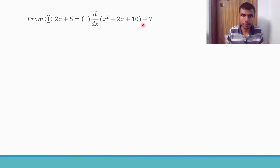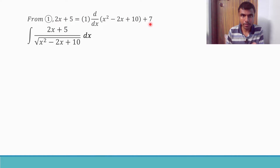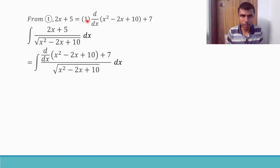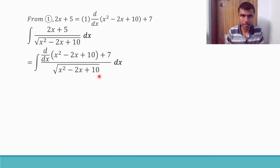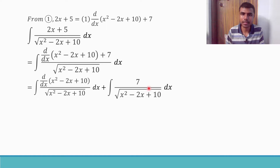So 2x + 5 is nothing but 1 times the derivative of (x² - 2x + 10) plus 7. Substituting back into our given integral, the numerator becomes [derivative of (x² - 2x + 10) + 7], all over the square root of (x² - 2x + 10). I split these into two separate integrals and integrate them separately.